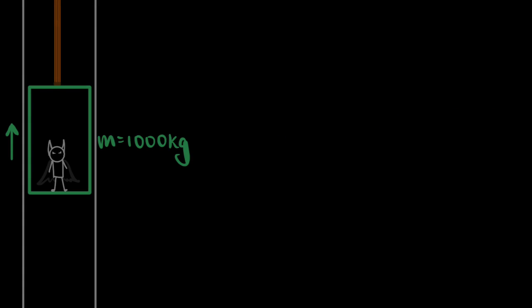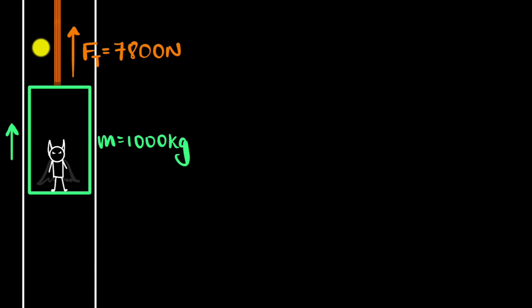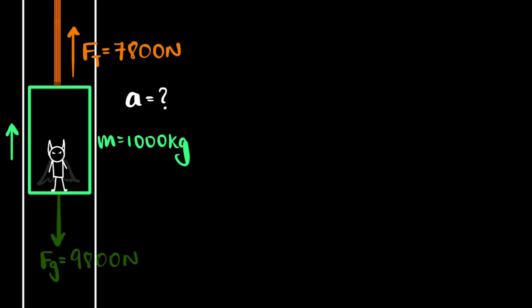Let's solve a couple of problems on Newton's second law. Here's the first one. We have an elevator which is moving up, and the mass of the elevator, including the passenger inside, is 1,000 kilograms. The tension force of the cable is about 7,800 Newtons. Our goal is to figure out what the acceleration of this elevator is. We're also given that the gravitational force acting on that elevator, including the passenger, is about 9,800 Newtons.